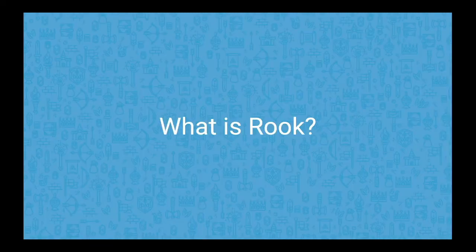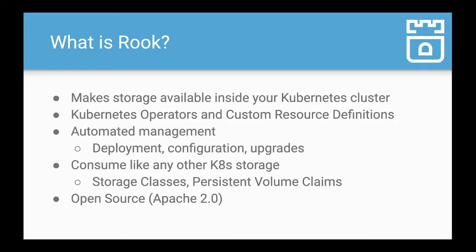Rook aims to overcome these challenges. Rook makes storage available inside your Kubernetes cluster and supports multiple different backends. Each is a different Kubernetes operator with its own custom resource definitions. Rook provides automated management including deployment, configuration, and updates. Once storage is set up, it can be consumed like any other Kubernetes storage with storage classes and persistent volume claims. Rook is also fully open source using the Apache 2.0 license.